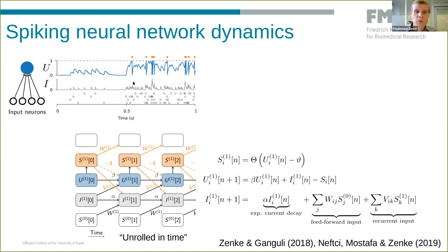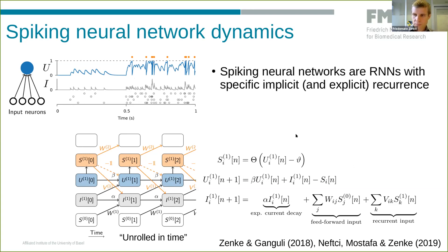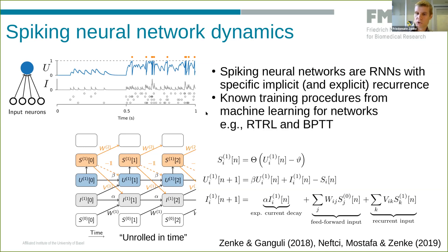At the output level, you generate spikes, denoted by the Heaviside function, which filters the membrane potential dynamics of the leaky integrate-and-fire neuron with a hard threshold — it tells you whether to emit a spike in a certain time step or not. Spiking neural networks are basically RNNs with very specific, implicit, and explicit recurrence. This is good because our friends from machine learning have worked out how to optimize such networks. There are known training procedures: real-time recurrent learning (RTRL) and backpropagation through time (BPTT).